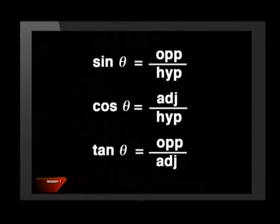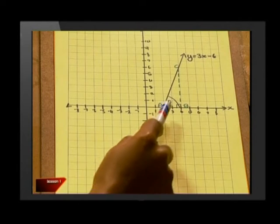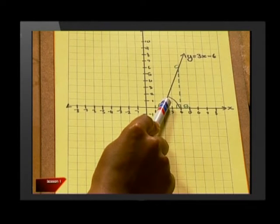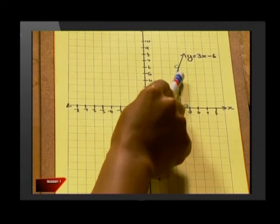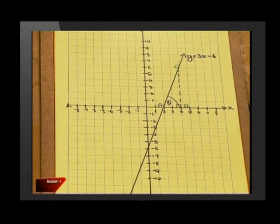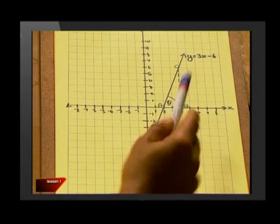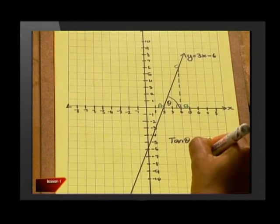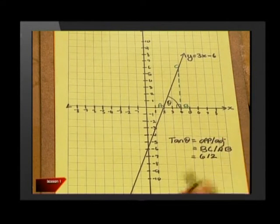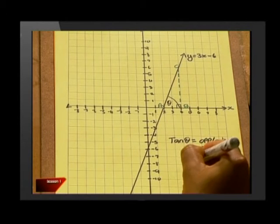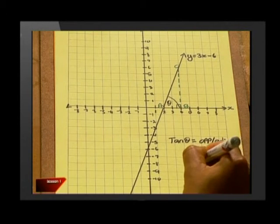Excellent. Here are the trig ratios: sine, cosine, and tan of theta. Can you see which one will be useful to us? Okay, if I put my finger on the angle theta, we know the length of BC which is the opposite side and AB which is the adjacent side. So we can use tan of theta. BC is 6 and AB is 2, so tan theta is 3.